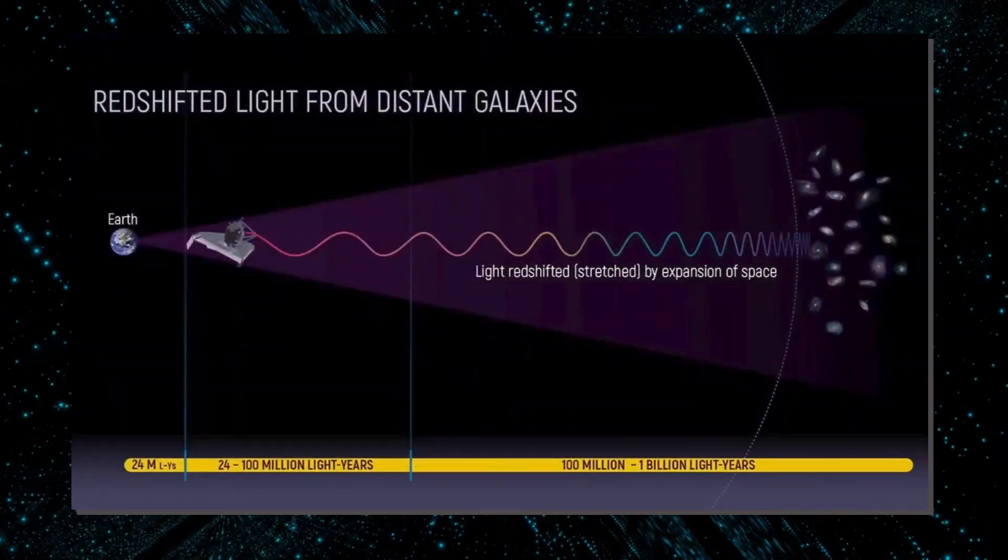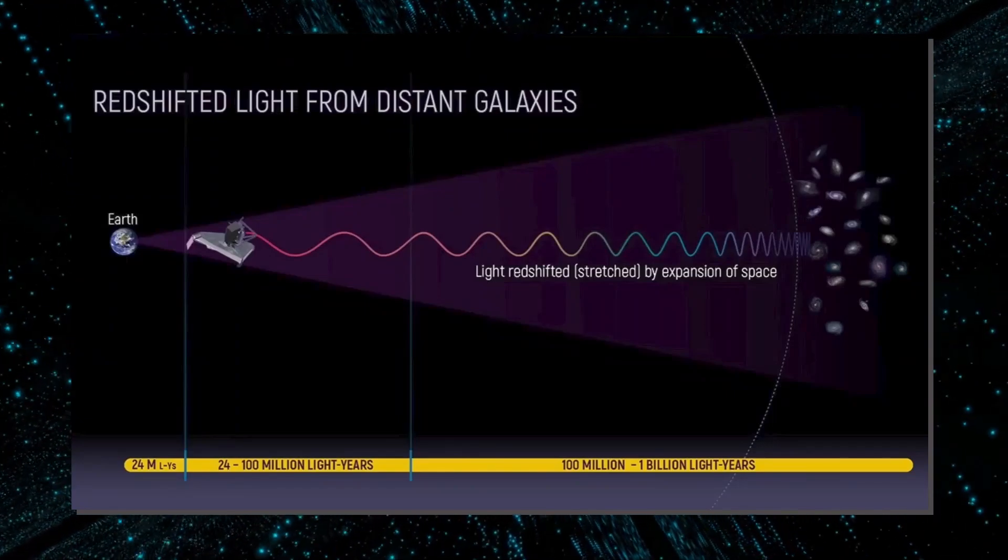The further back in time we witness a galaxy, the stronger the redshift. When the cosmos expands, redshift describes how much a galaxy's light has been stretched.